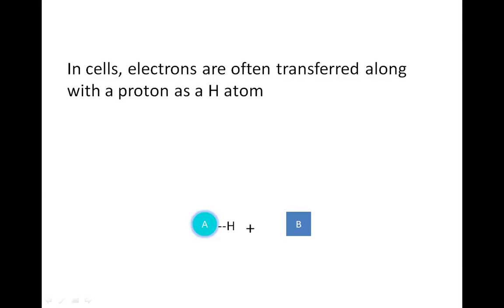During redox reactions in cells, electrons are often transferred along with a proton. In other words, a hydrogen atom is transferred. This is still considered a redox reaction.